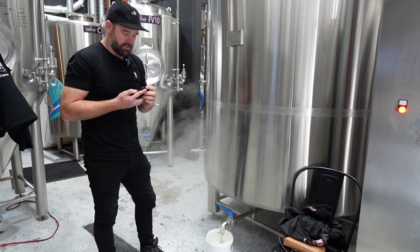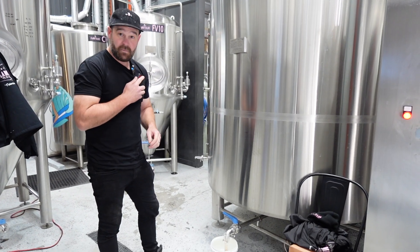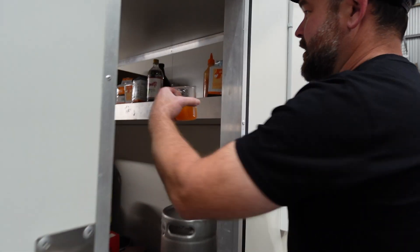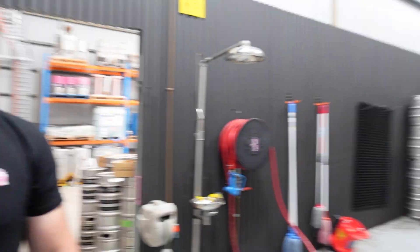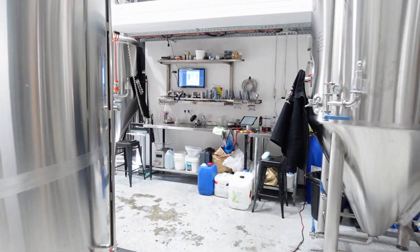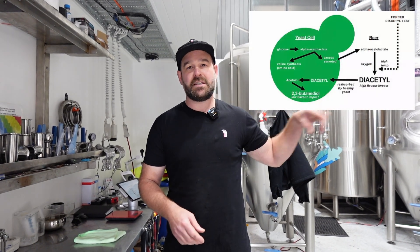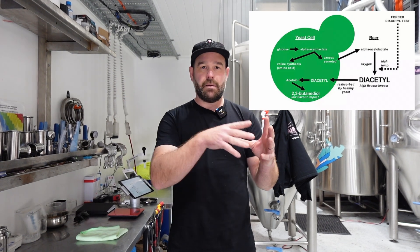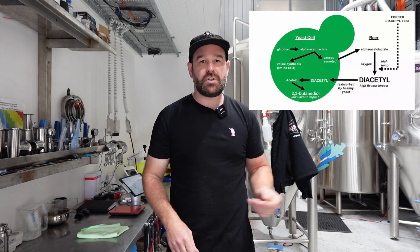This is the official poor man's diacetyl test. What we need is a five-litre bucket. We're going to split our sample and add hot liquor to it - this is the forced diacetyl test. Set a timer for 20 minutes. Then we're going to put this straight into the cool room. We're actually introducing oxygen at the moment, so we'll get some dissolved oxygen flavours as well, but we can ignore them - all we're chasing is diacetyl. We'll wait our 20 minutes and then cold crash that as quickly as possible. What we're doing is adding DO and heat to turn the precursor alpha-acetyl-lactate into diacetyl.